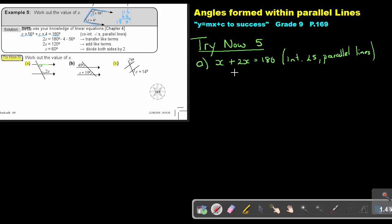Then if I simplify, this will be 3X = 180. I divide by 3 on both sides. My value of X will be 60. So 2 times 60 is 120, and 120 + 60 will give me 180.